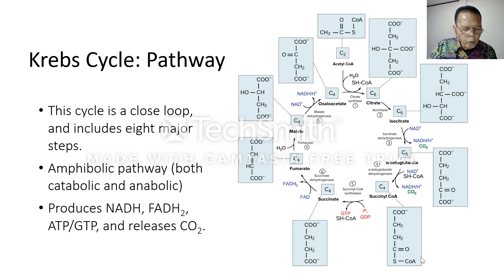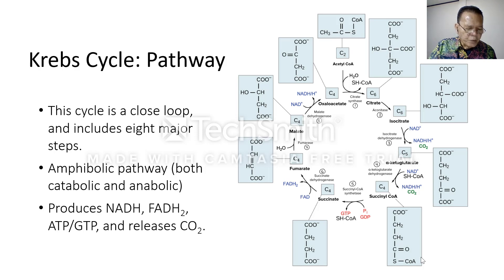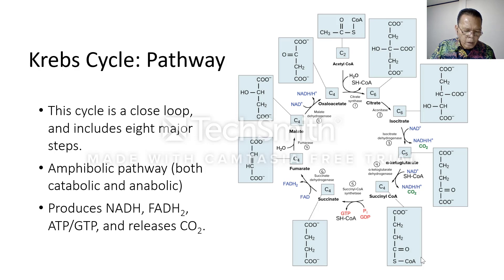Steps 3 and 4 are both oxidation and decarboxylation steps which release electrons, reducing NAD+ to NADH and releasing a carbonyl group to form a carbon dioxide molecule. Alpha-ketoglutarate is the substrate of step 4, and the product is succinyl-CoA. The enzyme that catalyzes step 4 is regulated by feedback inhibition of ATP, succinyl-CoA, and NADH.